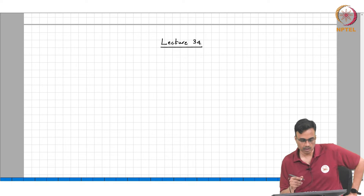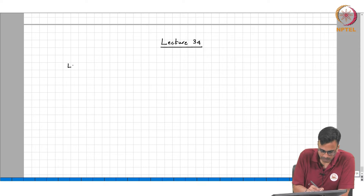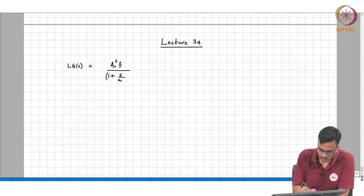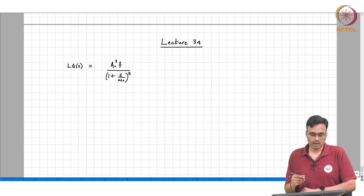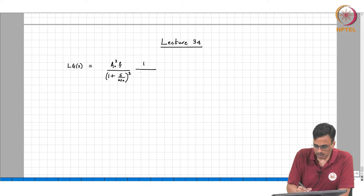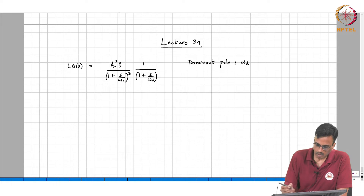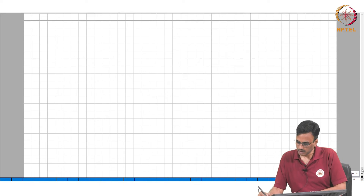Good morning and welcome to analog electronic circuits. This is lecture 34. In the last class we were looking at trying to stabilize a high-order system. For example, we had taken a system where the loop gain function had third order and recognized that the system is unstable for A-naught-cubed-f greater than or equal to 8. Then we said if we try to make it look like a first-order system by creating an extra pole — the dominant pole omega-d — where omega-d is much smaller than omega-naught.